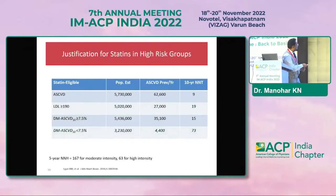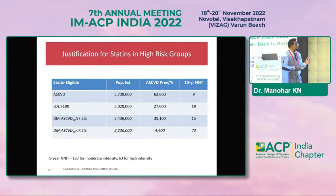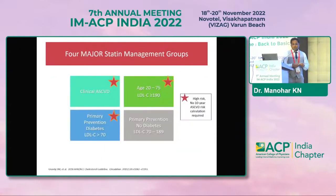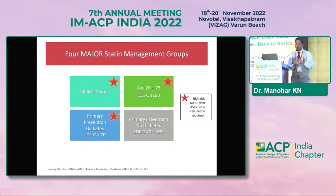Regarding indications for statin therapy: are we justified in treating high-risk groups? Statin eligibility is clear for those with ASCVD, LDL above 190, or diabetics with ASCVD risk above or below 7.5 percent. The number needed to treat to prevent one coronary event in someone with ASCVD is just nine patients. In diabetics with ASCVD risk above 7.5 percent, the NNT is about 15. The calculator only needs to be opened for primary prevention in non-diabetics with LDL between 70 and 190.